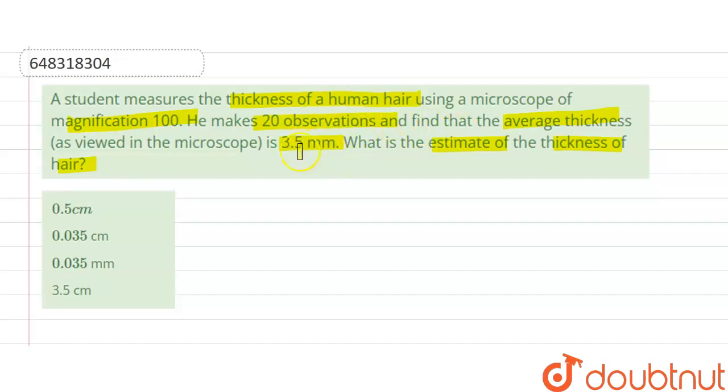Options are: option one is 0.5 centimeter, option two is 0.035 centimeter, option three is 0.035 millimeter, and option four is 3.5 centimeter.